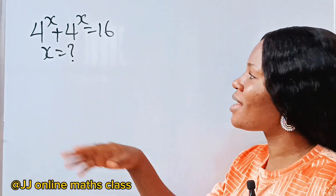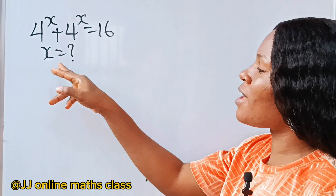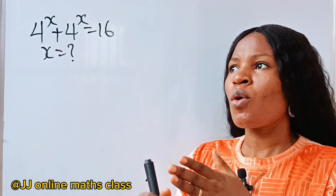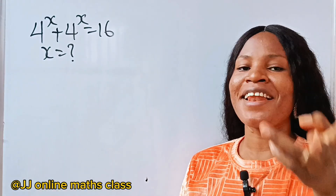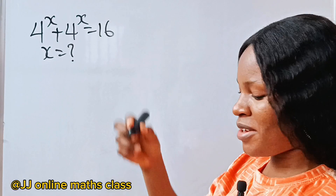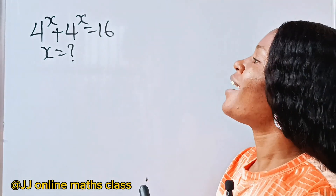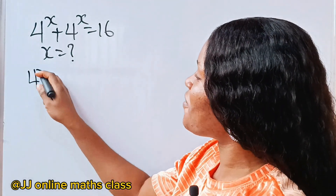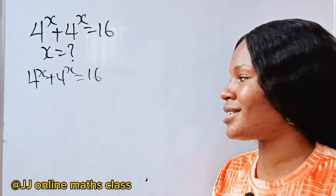Let's solve this together and have fun. There is a very easy way to solve this and get your solution, but have you wondered what if we decide to use the difficult method? Let's do it together. This particular question, let's solve it the hard way first. The question is: 4 to the power of x plus 4 to the power of x is equal to 16.